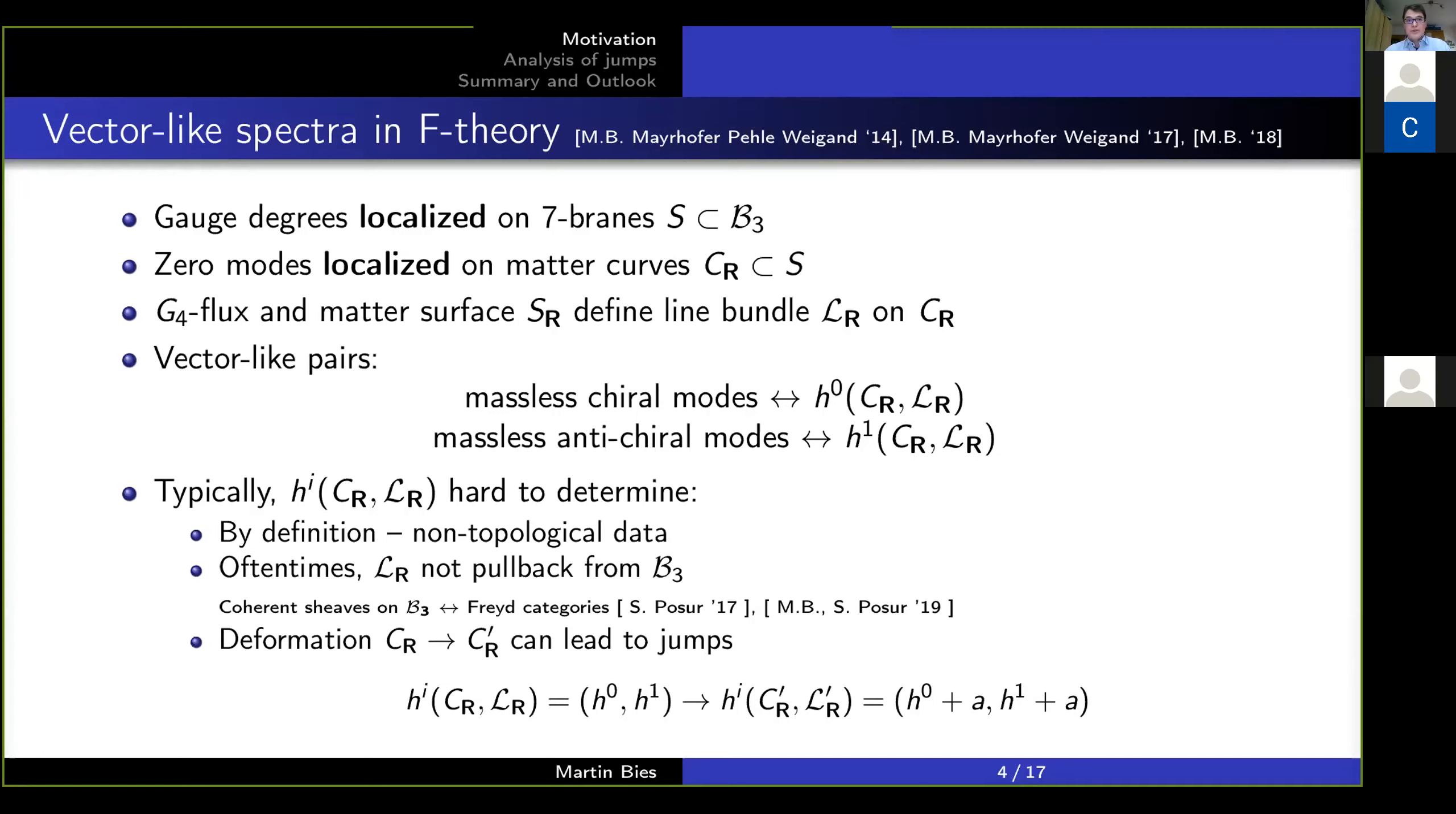Even more, you oftentimes find that it's not even possible to find these functions as restrictions from other functions on the overall space, and you have the additional complication that if you deform the curve, then you can actually have a jump which takes you from values H^0, H^1 to H^0 plus A, H^1 plus A. That is the difference, that is the chiral index, the topological quantity remains the same, but in this process you generate, let's say this is your Higgs curve, that you're looking at A additional vector-like pairs, Higgs pairs. That is of interest for phenomenology because we would like to have a specified number of Higgs pairs.